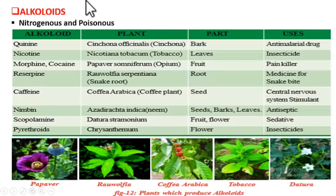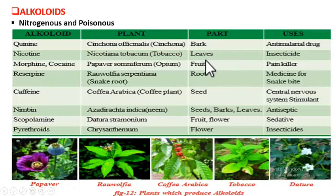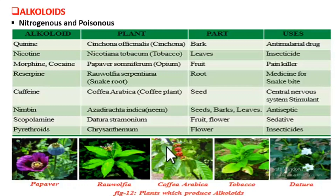Alkaloids are nitrogenous compounds — ringed compounds containing nitrogen — and they are very poisonous to humans and animals, though not to plants. They are stored in different parts of the plant like bark, leaves, fruits, and roots. By being poisonous, alkaloids protect the plant from being grazed by herbivores, and they also have a strong scent to deter them.